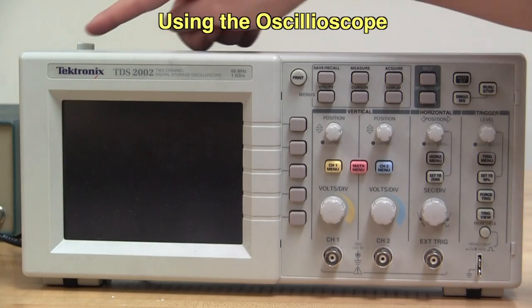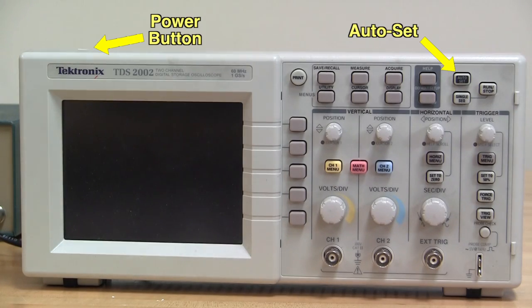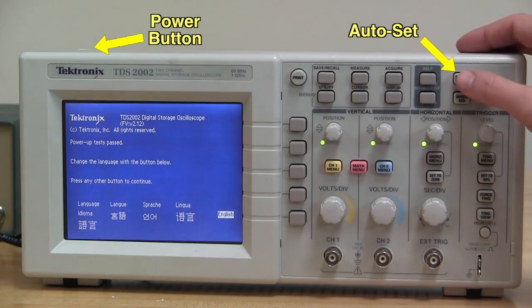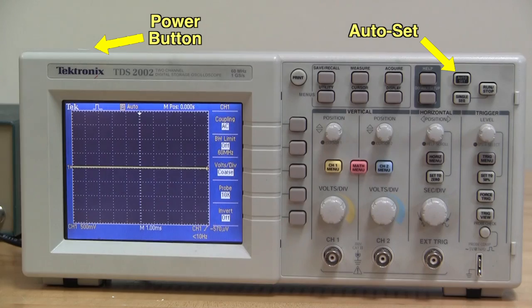To use the oscilloscope to see the wave output by the frequency generator, first turn on the oscilloscope and then choose English as the language. Once the oscilloscope is on, press the auto-set button.